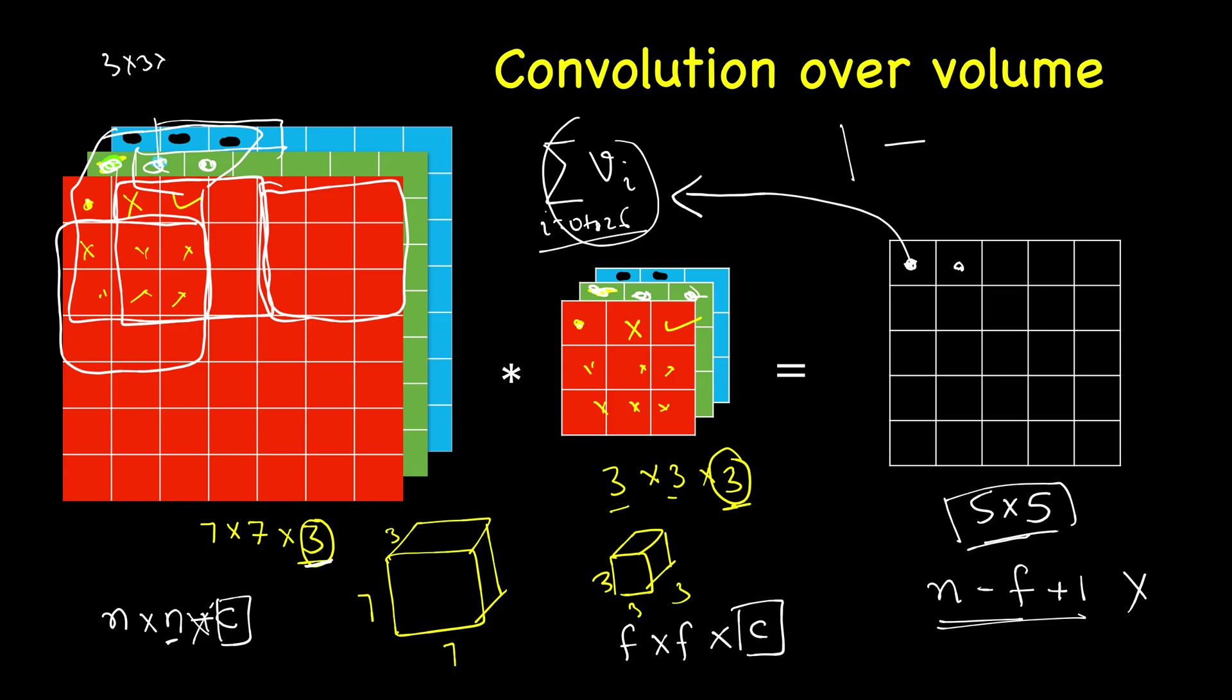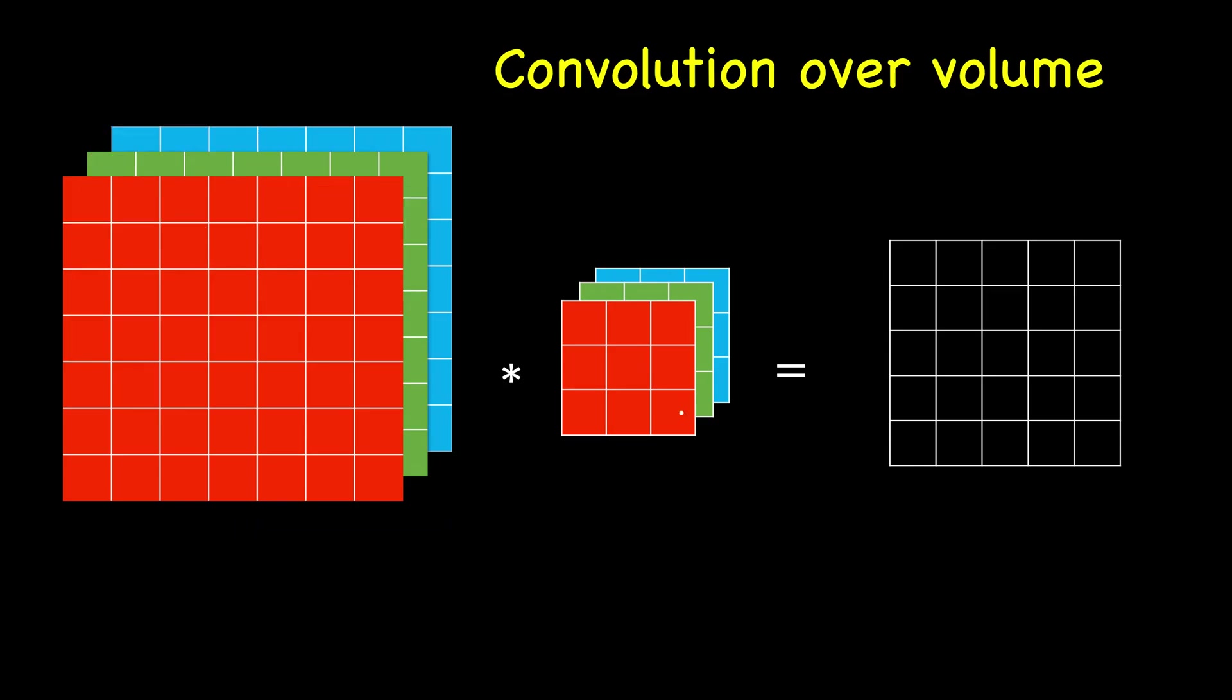Let's say we want to also detect some other features. Then we will add one more filter or one more volume, you can denote it like this. And again, the number of channels should be same as this one. f2×f2×c, this is f1×f1×c. And this filter is detecting something else, some other feature. You can add even more filters.